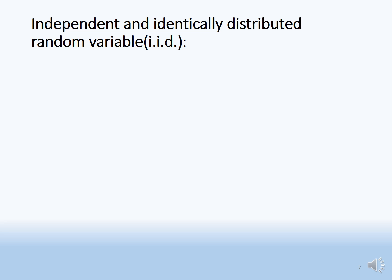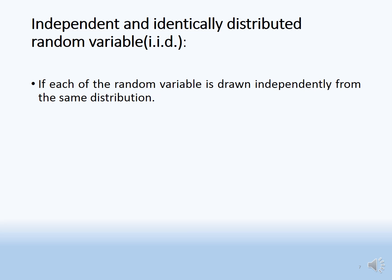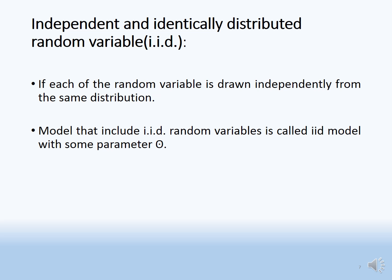Independent and identically distributed (IID) random variables: each random variable is drawn independently from the same distribution. This is called an IID random variable — it has the same value for the distribution parameter. A model that includes IID random variables is called an IID model with parameter theta.